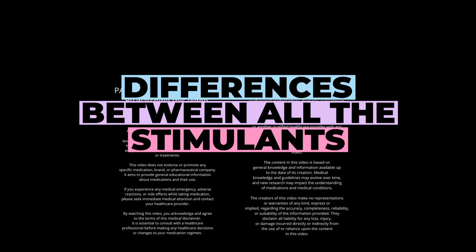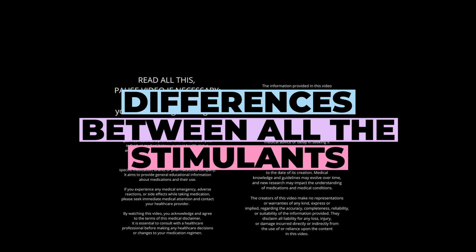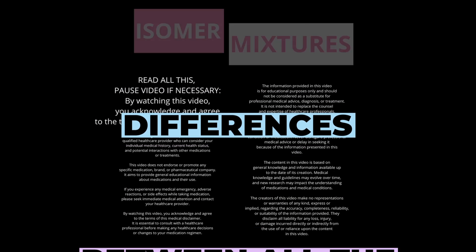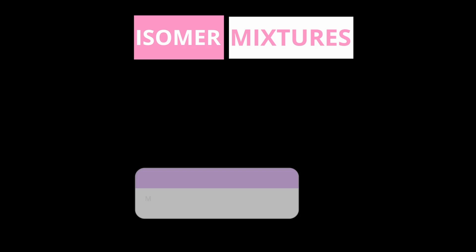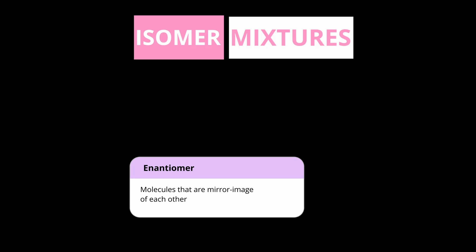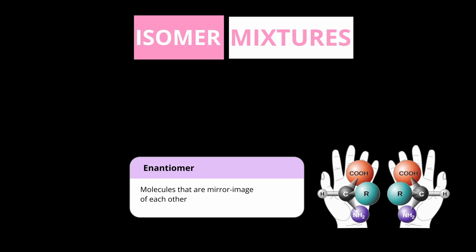Now let's move to the second big way that stimulant formulations differ, and that has to do with their isomer mix. Both amphetamine and methylphenidate have two enantiomers. Enantiomers are molecules that are mirror images of each other. The best example is your left and your right hand — they are mirror images, they look incredibly similar, but you can't superimpose them on one another.